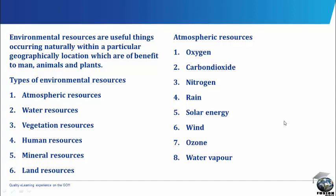Looking at atmospheric resources, these are resources that have elements such as wind, water, sunlight and gases which are of benefit to man, animals and plants. Resources of the atmosphere include sunlight, oxygen, carbon dioxide, wind, nitrogen, ozone, water vapor, smoke, dust particles and some inert gases like neon, argon, helium and so on.